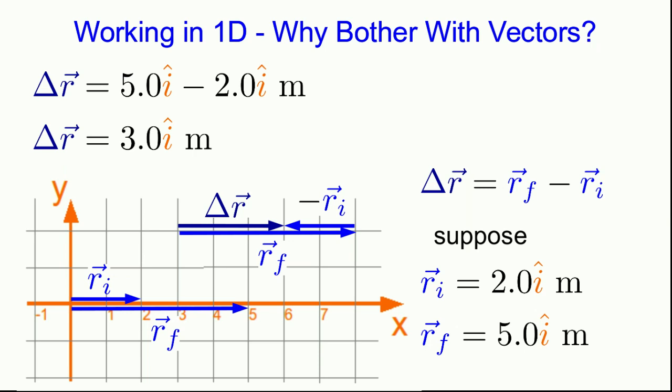Well so what? Well notice something. The magnitude of rf was 5 meters and the magnitude of ri was 2 meters. And so it looks like I could have just subtracted their magnitudes to get the correct magnitude, 3 meters, of delta r. Can I always do this?